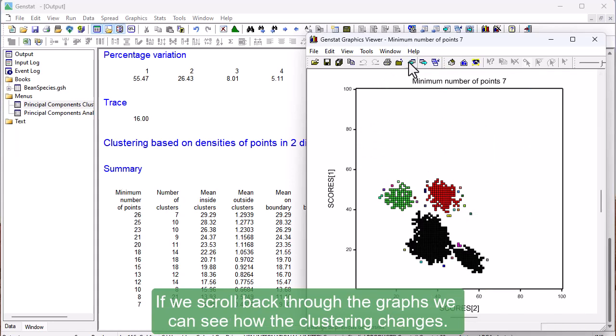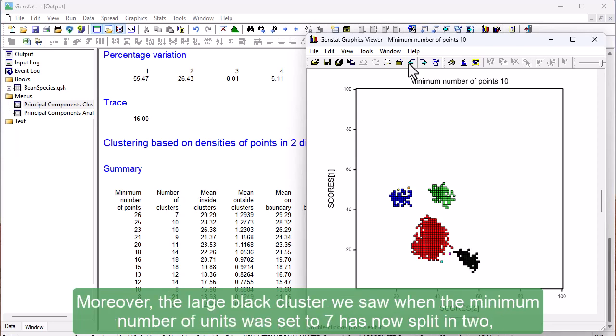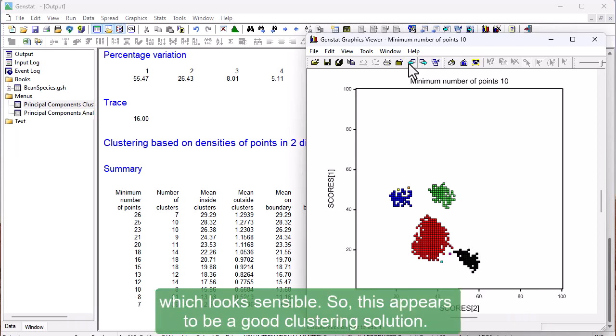If we scroll back through the graphs, we can see how the clustering changes. When the minimum number of units is increased to 10, many of the small single-celled clusters have disappeared. Moreover, the large black cluster we saw when the minimum number of units was set to 7 has now split in 2, which looks sensible. So this appears to be a good clustering solution.